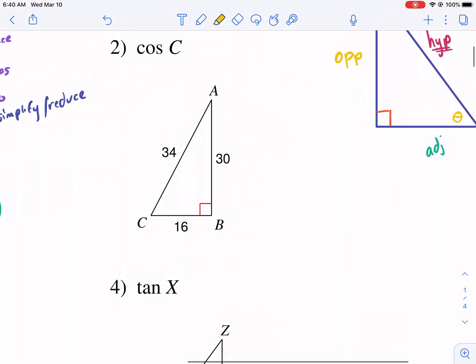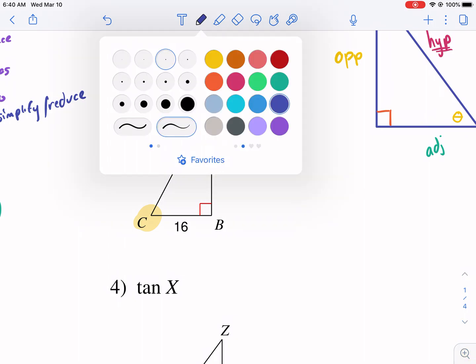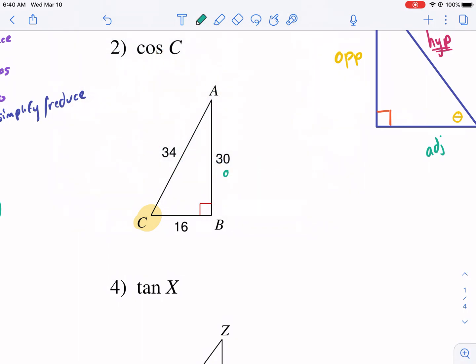Moving on to number two, cosine of C. So now we're looking at C. And we're thinking about the cosine. So first thing, find my reference angle. Done. Opposite. Adjacent. Hypotenuse is always the same. So we have cosine of an angle is equal to, false, adjacent. Adjacent. C-A-H. Adjacent over hypotenuse. So cosine of C is equal to adjacent 16 over 34.